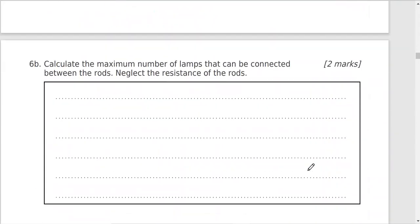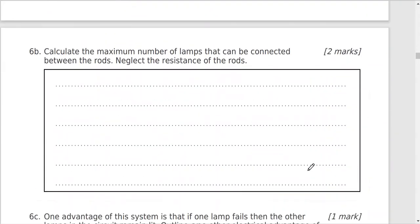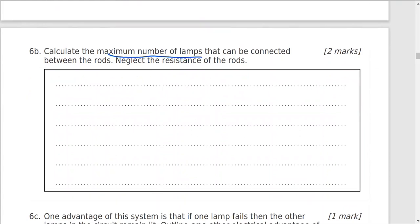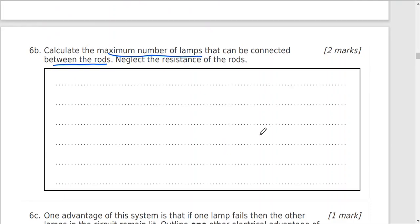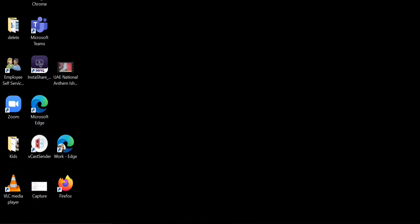Part B. Calculate the maximum number of lamps. The maximum number of lamps that can be connected between these two rods. Neglect the resistance of the road. Now lamps, they're connected in parallel.